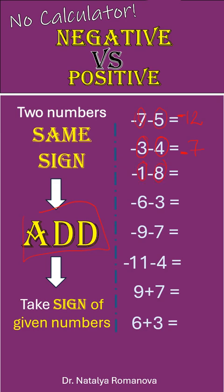So we take 1 plus 8, it is 9, and we keep the common sign, minus 9.